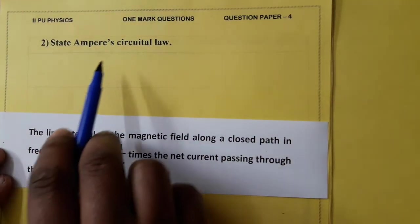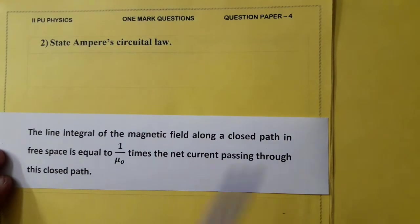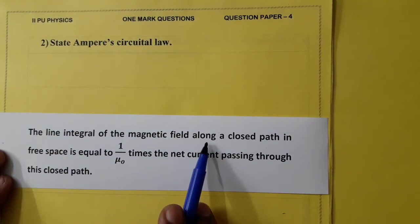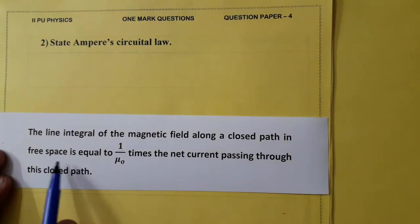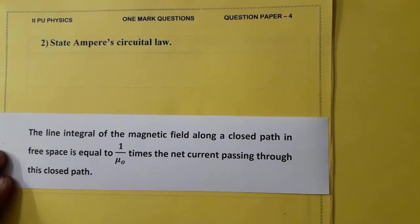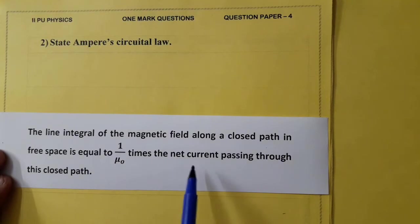State Ampere's circuital law. The line integral of the magnetic field along a closed path in free space is equal to 1 by mu naught times the net current passing through this closed path. Pause the video and copy the answer.